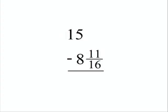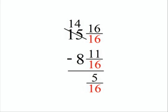You have to borrow 1 from the 15 and it now becomes 14. Next, you have to rewrite the 1 as a fraction because the denominator of the lower fraction is 16. We rewrite that number 1 as a fraction 16 over 16. Now we can subtract 11 from 16 and get 5 sixteenths. And 8 from 14 is 6 for the whole number.